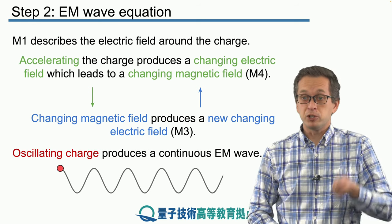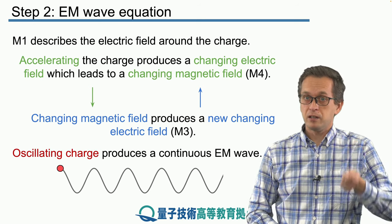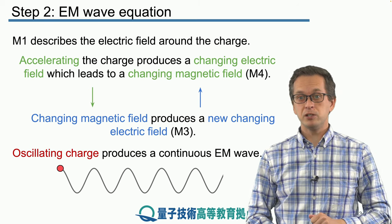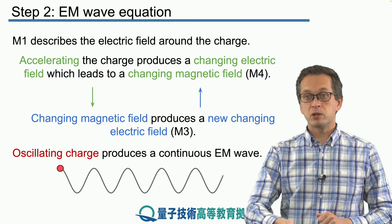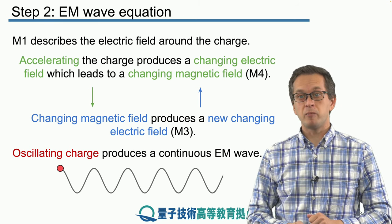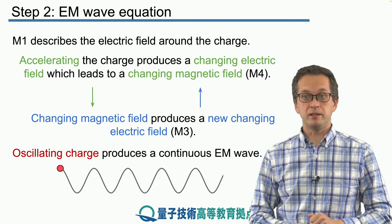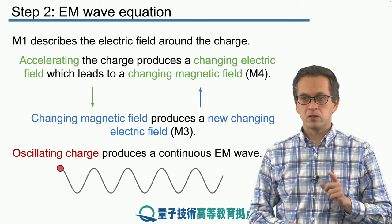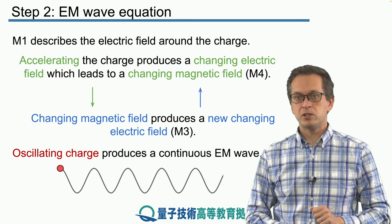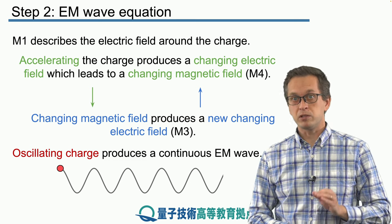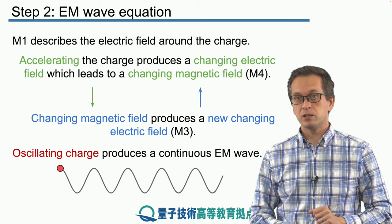So, if we just keep oscillating our little point charge, this will create a nice harmonic electromagnetic wave. This image is not very accurate because it is only for one dimension, so let's move to two dimensions and see what really happens.